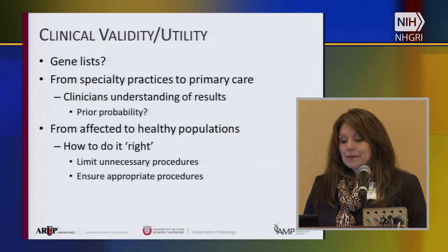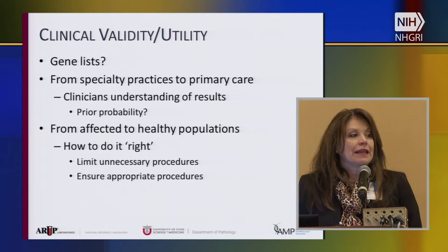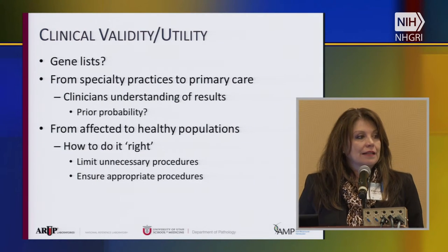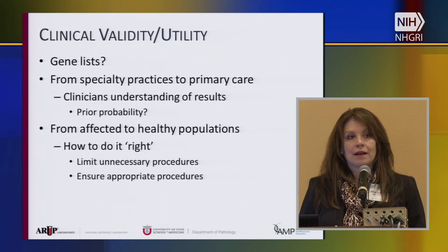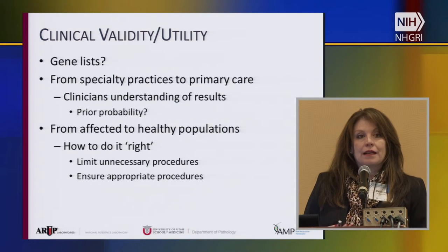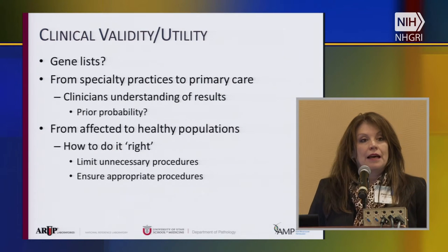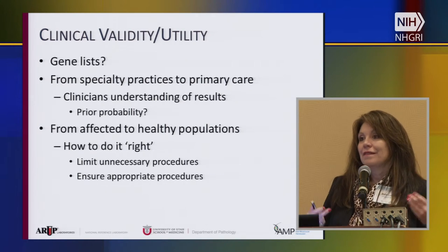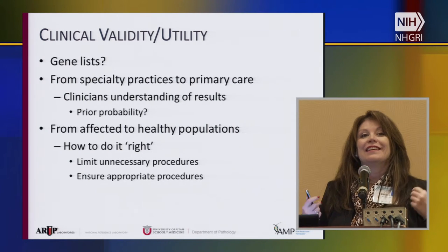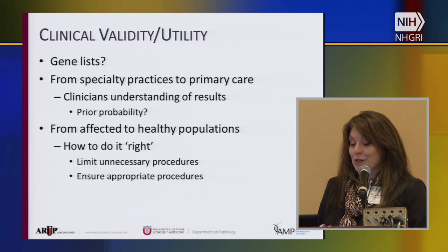One of the main topics and a hot spot right now is clinical validity and utility. Gail mentioned gene lists, and yes — even an exome or a medical exome, which is a very large gene panel, those are being done. The question is: we have an exome, we have a medical exome — which do we do, and how do we do this? We need data. We need laboratories or the people doing this to pull everything together so we can make decisions based on actual data.